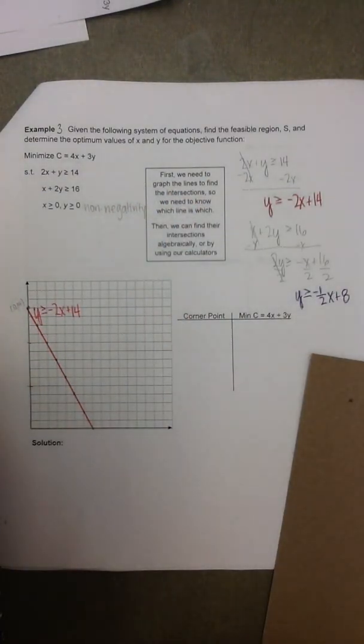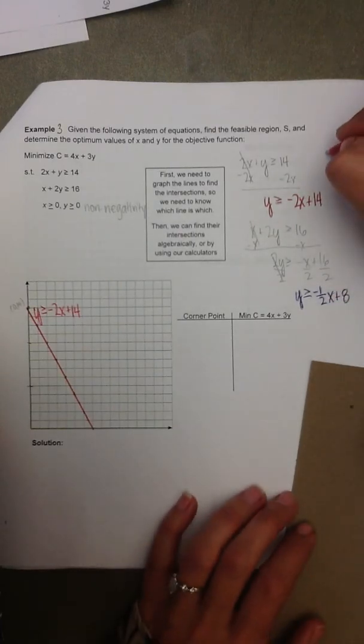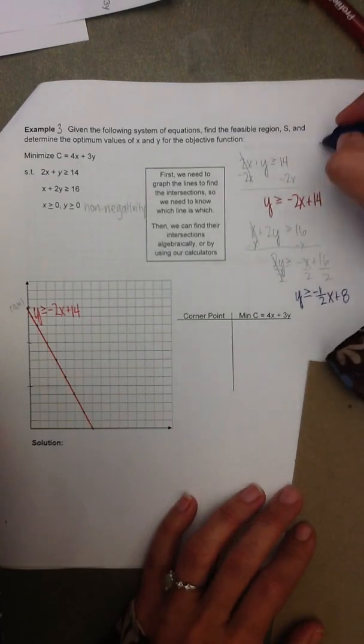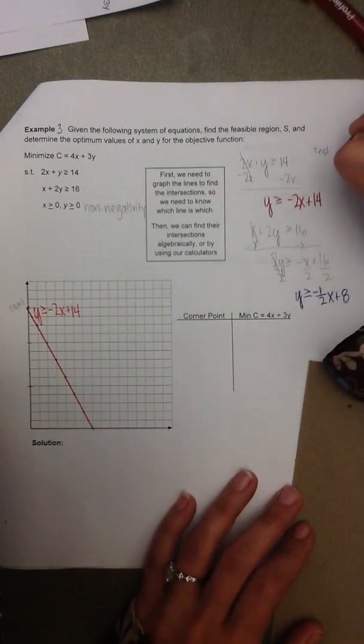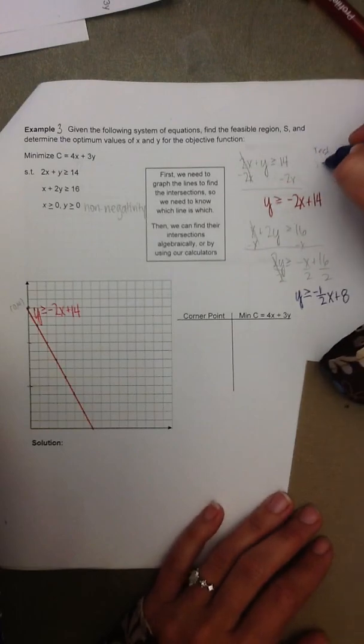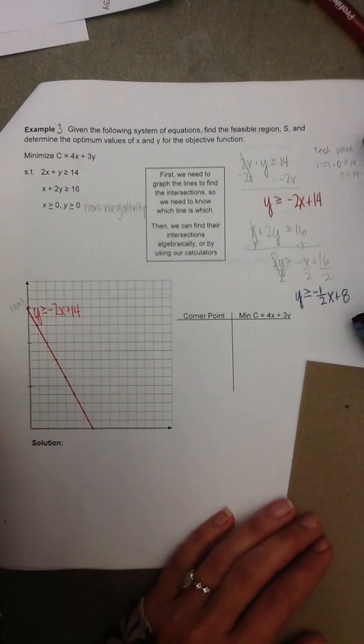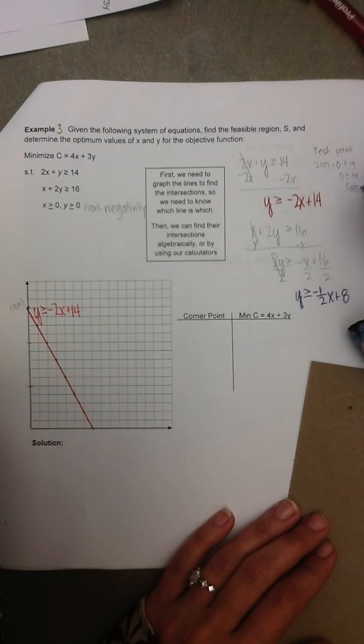So here's the line representing the inequality y is greater than or equal to negative 2x plus 14. However, I still need to determine which side of that line to shade. So if I use a test point of 0, 0, I like to go back to the original inequality, especially when it's written in general form like this, because when I plug in my test point, it generally makes an entire side of the inequality simplified as 0. So the statement I get here is 0 is greater than or equal to 14, which is a false statement.